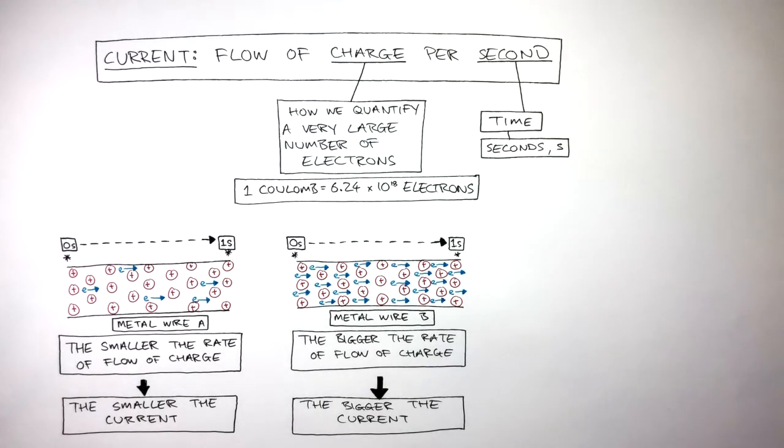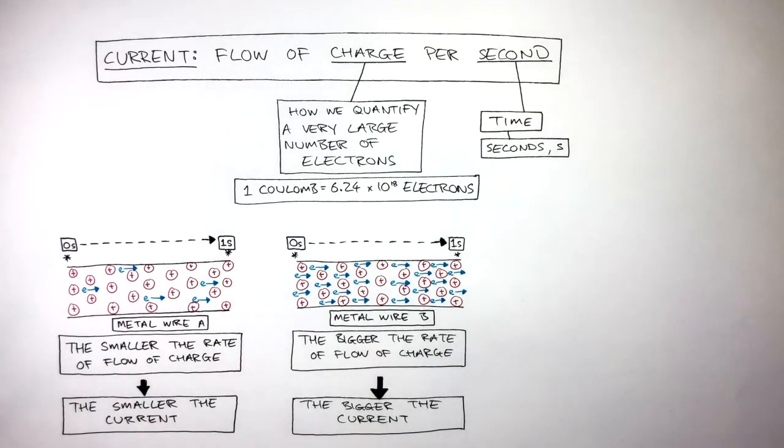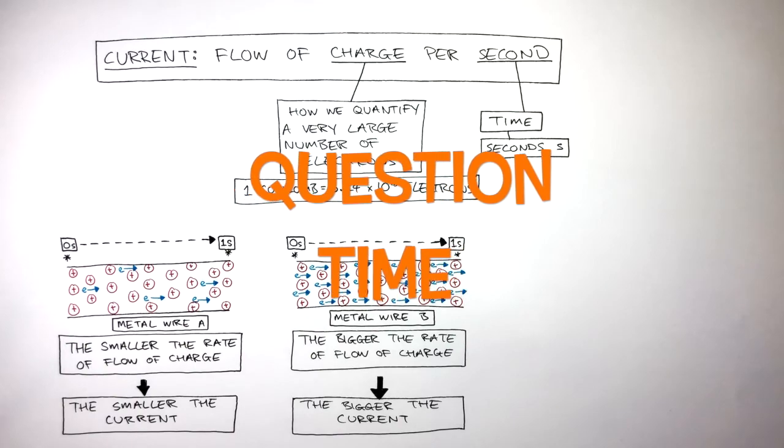If you ever see the word per in a definition, in this case, current is the flow of charge per second. In the equation, per means divide. So to calculate current, current equals the flow of charge divided by time. It's question time. Attempt these questions to check your understanding.